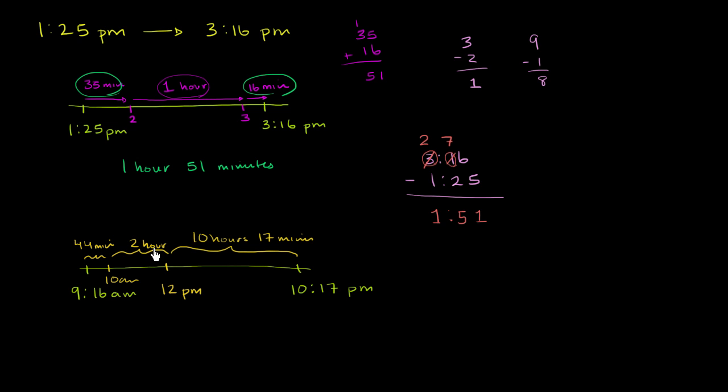So now we just add everything up. We have 2 hours plus 10 hours, which is 12 hours. And then 17 minutes plus 44 minutes. 4 plus 7 is 11, 4 plus 1 is 5, plus 1 is 6. So we have 12 hours and 61 minutes, which is strange to say because we know this is more than an hour. So 61 minutes is 1 hour and 1 minute. Then we add this hour to get 13 hours and 1 minute.